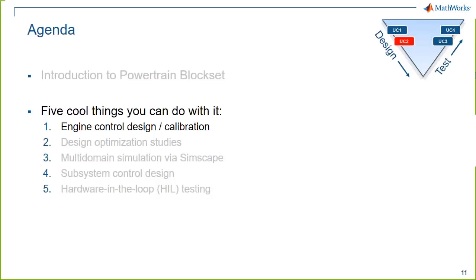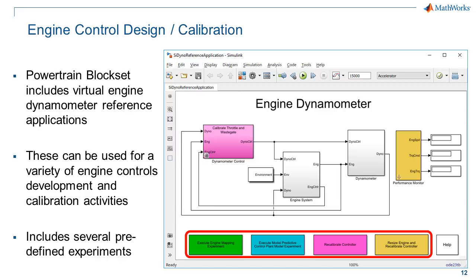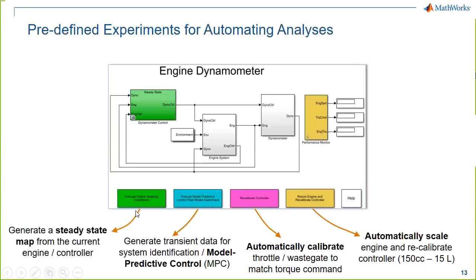Cool thing number one: engine control design and calibration. We're going to start with the spark ignition engine dyno reference application. The buttons at the bottom let you run different experiments: one generates a steady-state map from whatever engine and controller model you have plugged in, another supports model predictive control and system identification, another runs automatic calibration, and the latest in 17B allows you to automatically scale the engine — the default is a 1.5-liter — up or down by an order of magnitude.